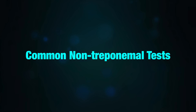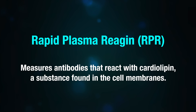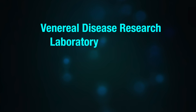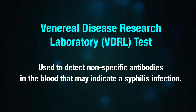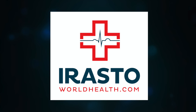Common non-treponemal tests include: Rapid Plasma Reagin, which measures antibodies that react with cardiolipin, a substance found in the cell membrane; and the Venereal Disease Research Laboratory test, or VDRL test, which detects non-specific antibodies in the blood that may indicate a syphilis infection.